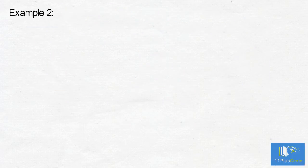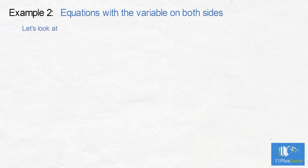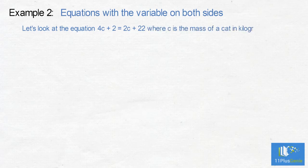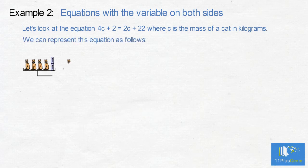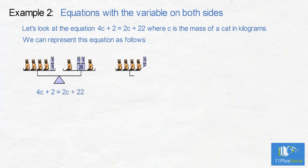Example 2: Equations with a variable on both sides. Let's look at the equation 4c add 2 equals 2c add 22 where c is the mass of 1 cat in kilograms. We can represent this equation as follows: a scale with 4 cats and 2 kilograms on the left is balanced by the 2 cats and 22 kilograms on the right.